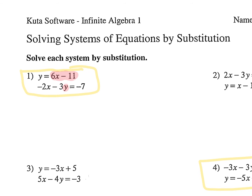That's our substitution. So all I need to see from you guys is the work behind this. You would rewrite: you have negative 2x minus 3, and instead of y, you're plugging in 6x minus 11. Equals negative 7. All you did was replace the y in the second equation with whatever the first equation said y equals.